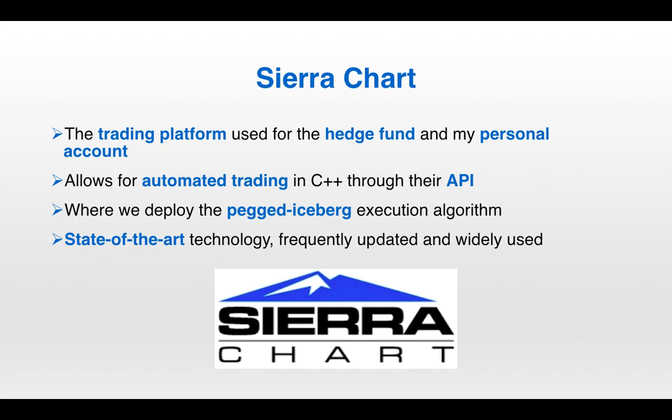That covers the different programming languages and the libraries corresponding to them. We'll end with a discussion of the trading platforms and brokerages we use to execute our trades. First up is Sierra Chart — this is the trading platform we use for the hedge fund, and I also use it for my personal account. They have a C++ API allowing for automated trading, so as discussed, our execution algorithm is programmed in C++ and we deploy it via Sierra Chart. Overall, it's just a good trading platform — good technology, very widely used, with frequent updates.